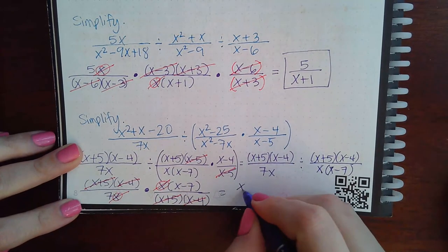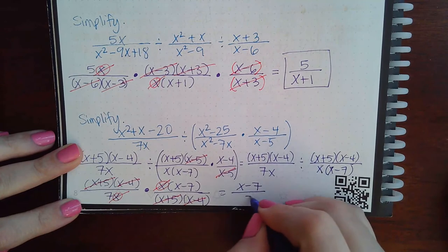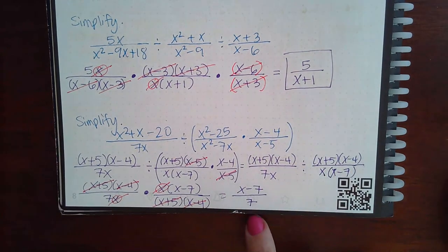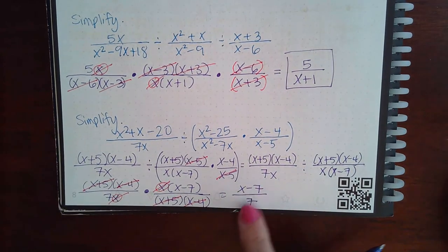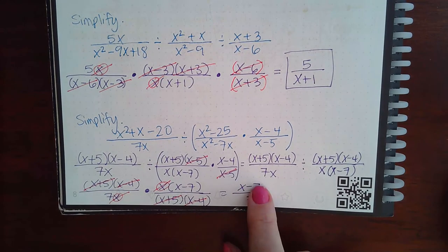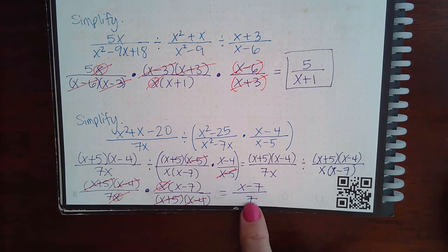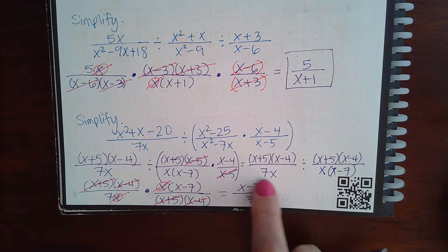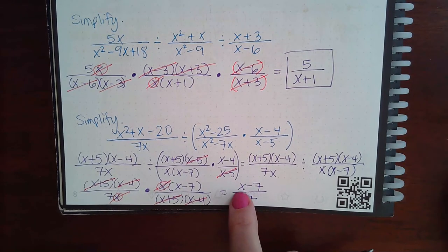So I end up with x minus 7 over a 7. Now remember you cannot cancel these 7s. Because these are two terms together. And that is a single term. You don't know if this entire numerator can be reduced by 7 because you don't know what x is.